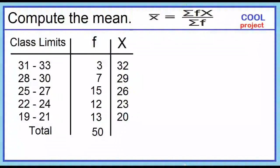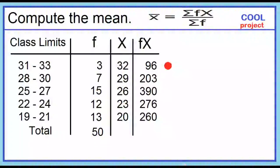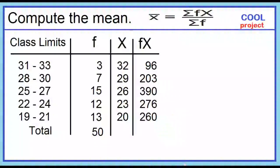Next, multiply the frequency and the class mark. Add a column for the product of the frequency and the class mark. 3 times 32 is 96; 7 times 29 is 203; 15 times 26 is 390; 12 times 23 is 276; 13 times 20 is 260.